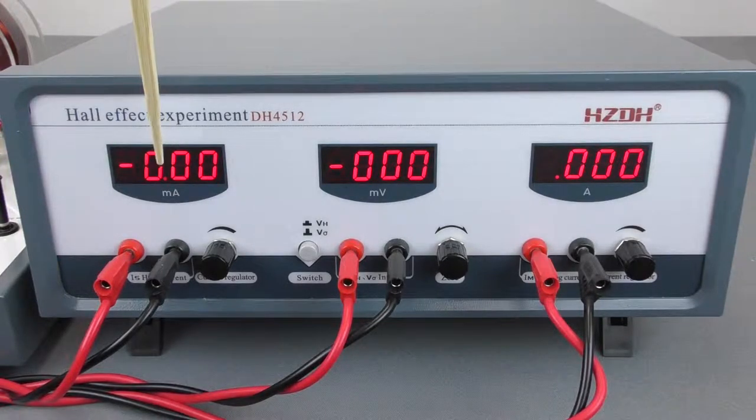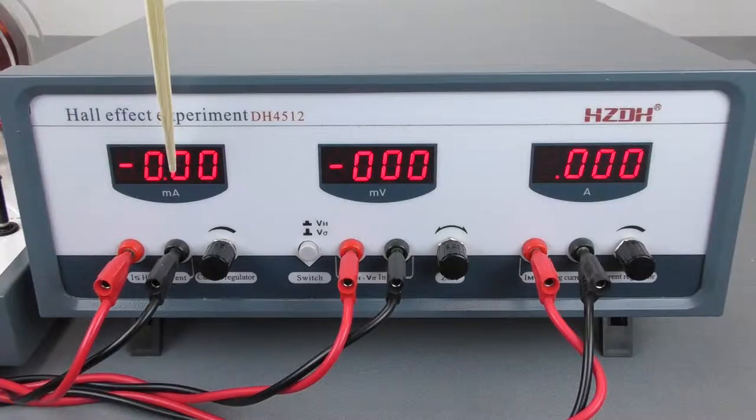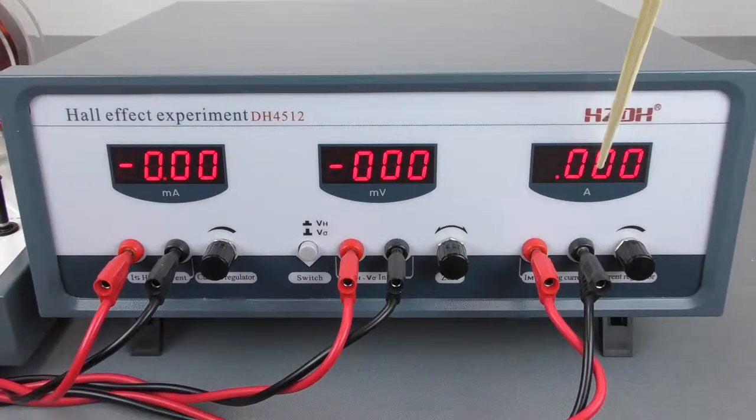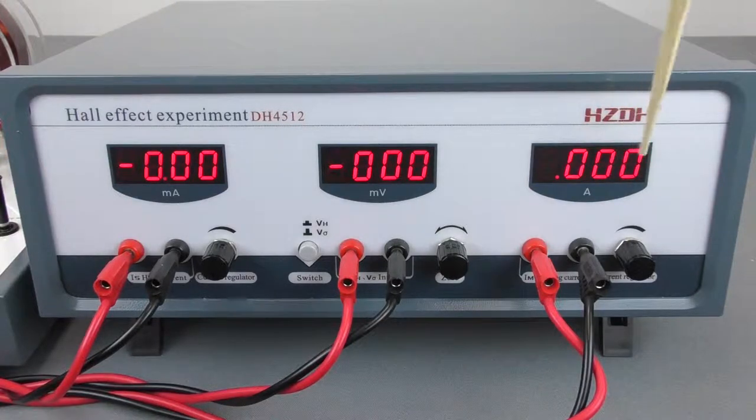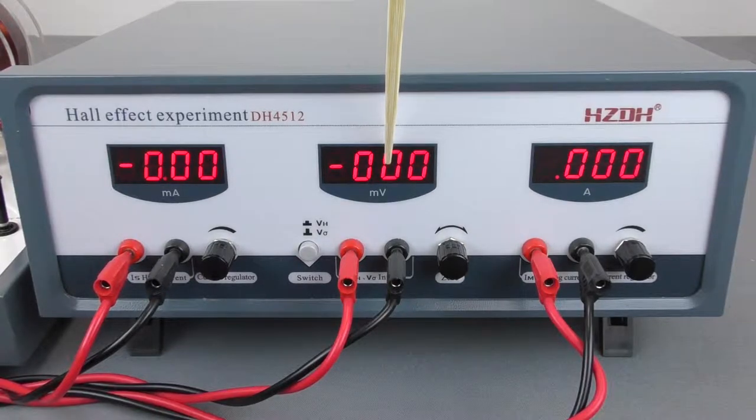It has a milliamp power supply for energizing the drive current, an ampere power supply for energizing the Helmholtz coils, and a millivolt voltmeter for measuring the Hall voltage and conductivity.